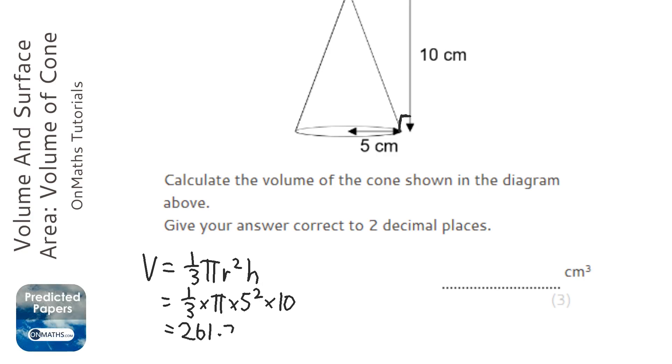261.79938... Now to two decimal places, this could be quite an interesting one because it's going to be 261 point, and that nine's going to move that nine up to a 10, which will make that kind of 80 centimeters cubed.